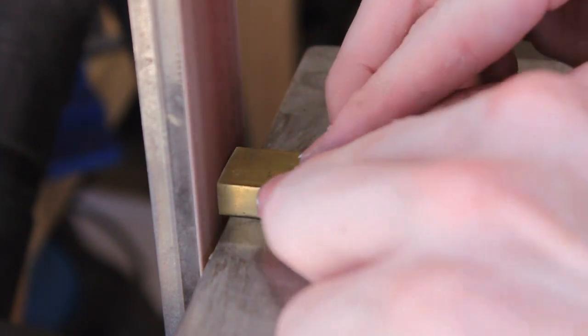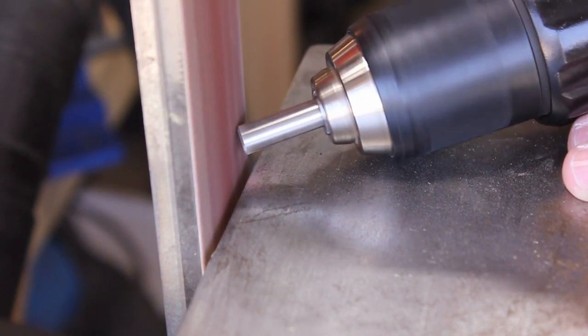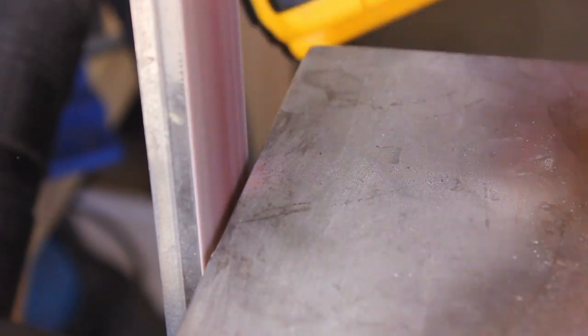So after we get it cut out, I'm going to clean them up on the belt sander and then we're going to mark out and drill out our hole in the piece of brass to accept this stainless pillar.